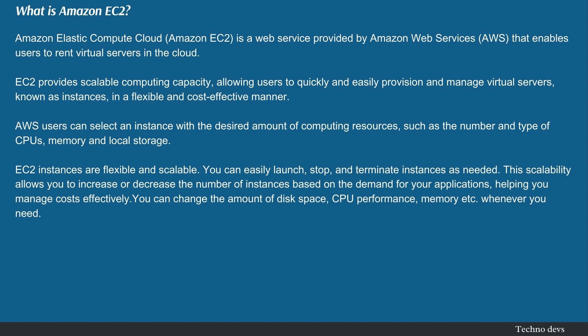AWS users can select an instance with the desired amount of computing resources, such as the number and type of CPUs, memory, and local storage. EC2 instances are flexible and scalable — you can easily launch, stop, and terminate instances as needed. This scalability allows you to increase or decrease the number of instances based on the demand for your applications, helping you manage costs effectively.